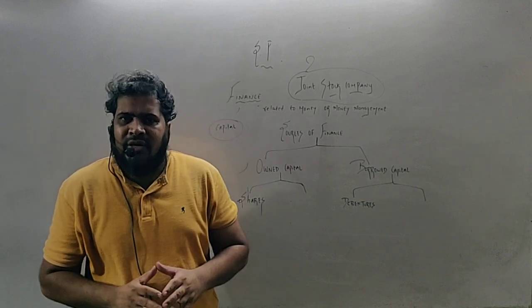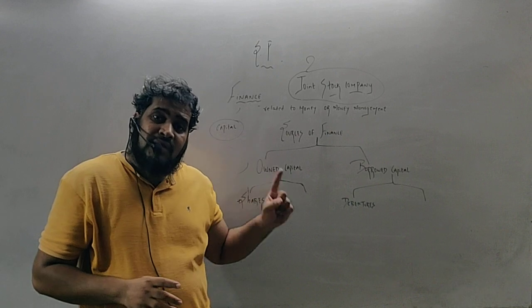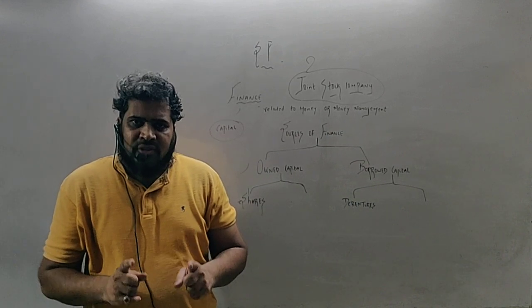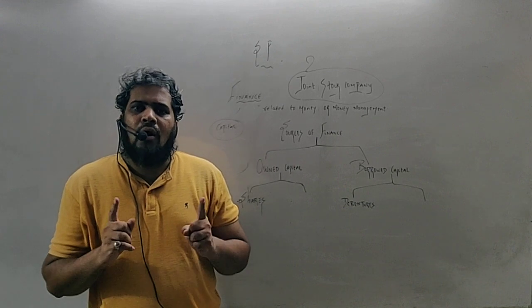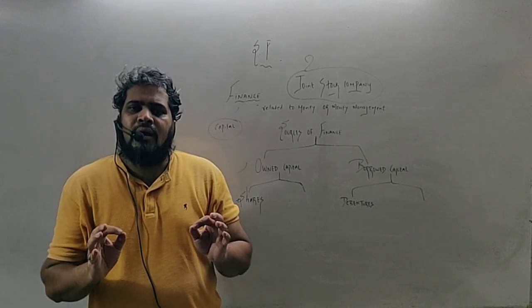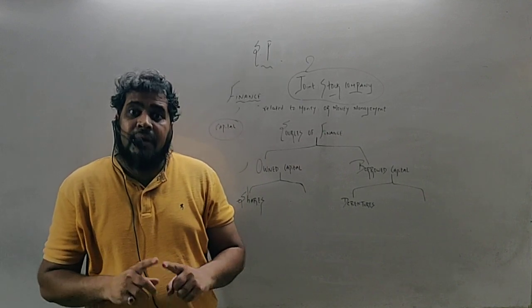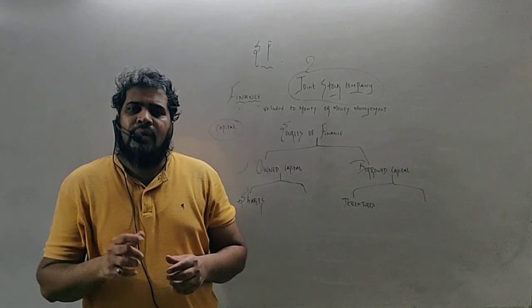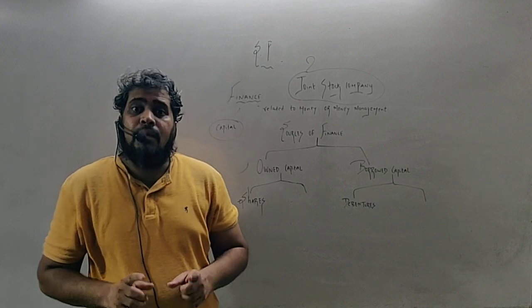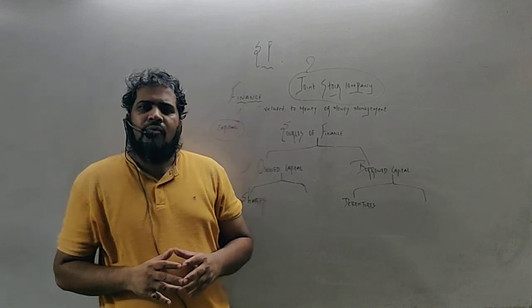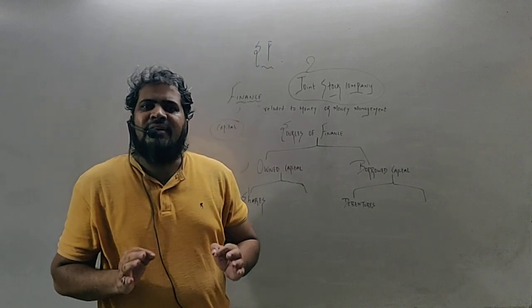This is the basic meaning of joint stock company. As per SP, what is joint stock company? Joint stock company is a voluntary, incorporated association, artificial person created by law, having a common seal and perpetual succession. Such type of company is known as a joint stock company.